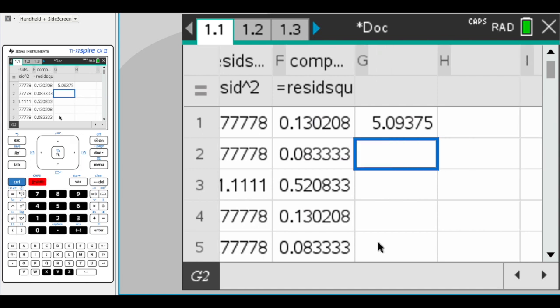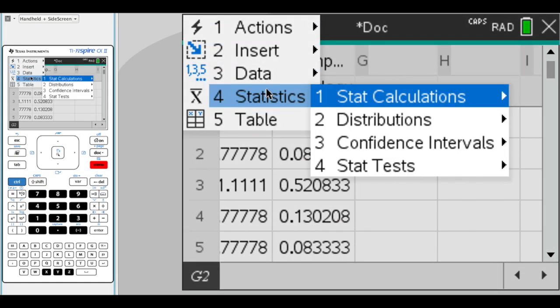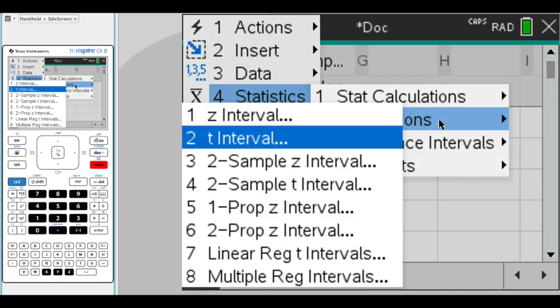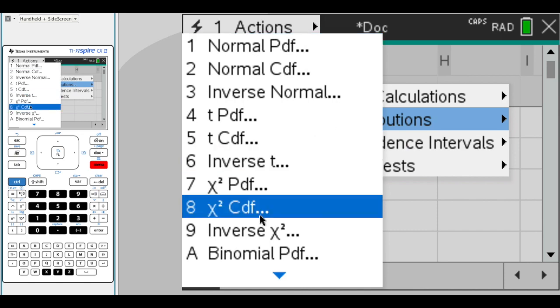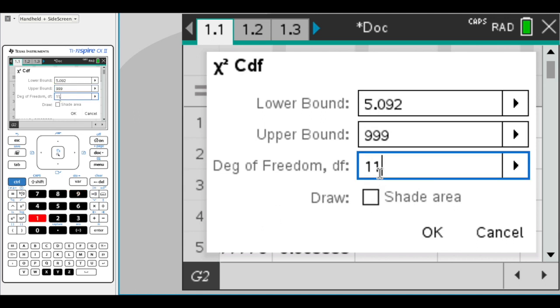If we want to calculate the p-value, what we need to do is hit menu, and then we're going to go to statistics. In this case, we want to sum up and find the probability, so we're going to go to distributions and go to chi-squared CDF. Our lower bound is our chi-squared statistic, so 5.092. Our upper bound we can just say is 999, some large value. I'm going to type in our degrees of freedom, which is 11. I'm also going to ask the calculator to draw out the chi-squared model here.